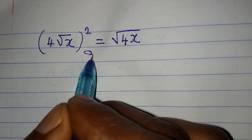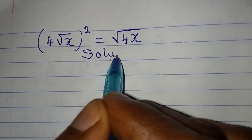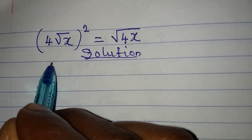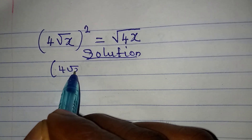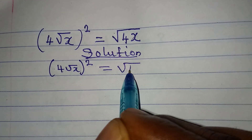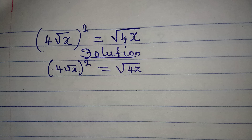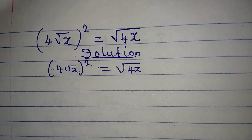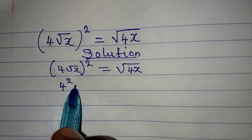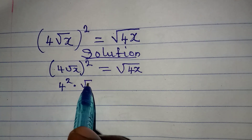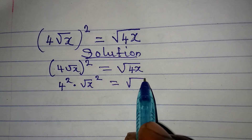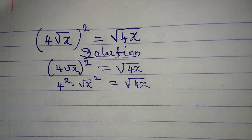Hello everyone, let's solve another Olympiad mathematics problem. We have 4 times the square root of x squared equal to the square root of 4x. This is the same thing as 4 squared multiplied by the square root of x squared, equal to the square root of 4x.